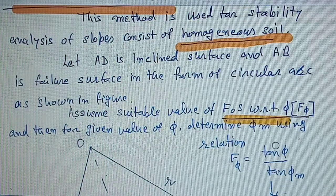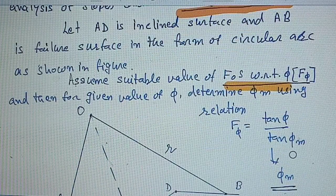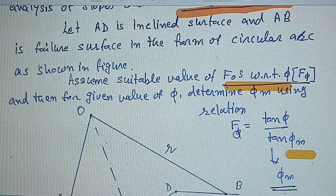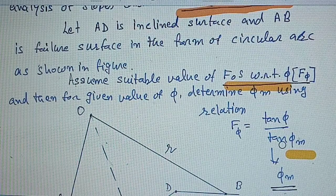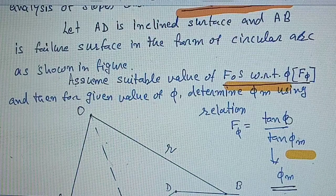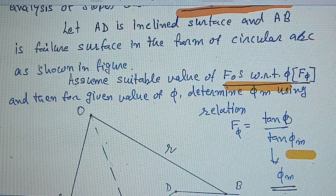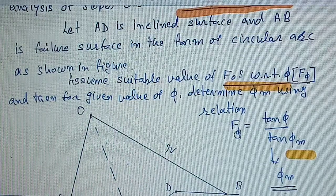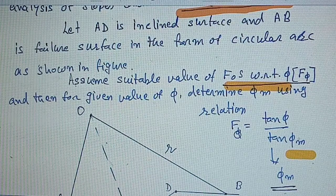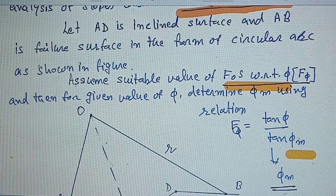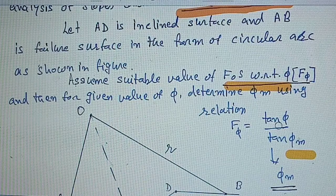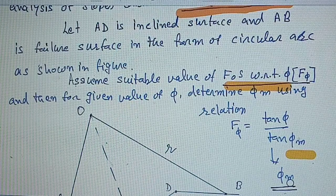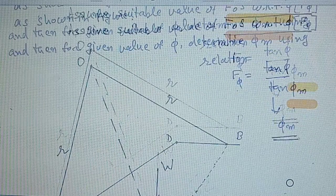After assuming the value of phi, determine the value of phi_m by the relation: F_phi equals tan(phi) over tan(phi_m), where phi is the angle of shearing resistance and F_phi is the factor of safety with respect to angle of shearing resistance. So phi is the assumed value, phi is the given value, and we can determine the value of mobilized angle of shearing resistance.